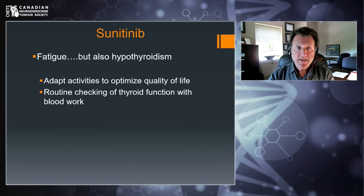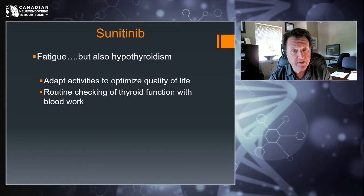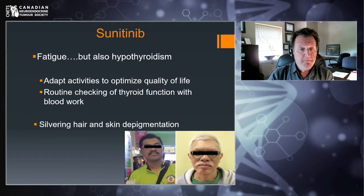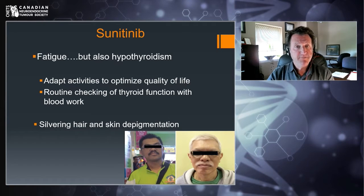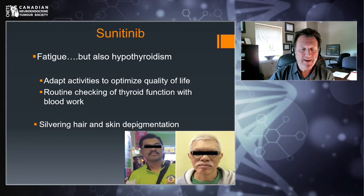Sunitinib can be very tiring for some patients, but it also causes problems with the thyroid. Sometimes fatigue is actually due to low thyroid, so it's important that your family physician or oncologist checks your thyroid as you go forward, because it's very easy to fix with thyroid replacement. Finally, many patients on Sunitinib for a significant period of time will report that their skin changes and especially their hair can become silver or gray — not just because they're getting older. Sunitinib can cause silvering of hair and some skin depigmentation.